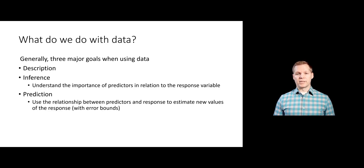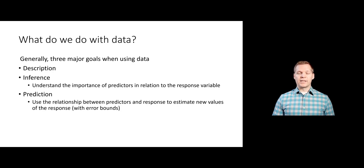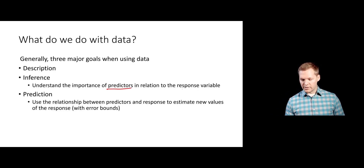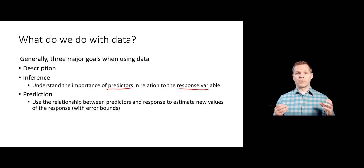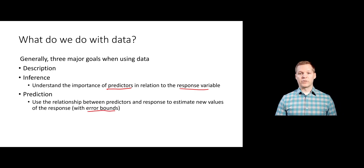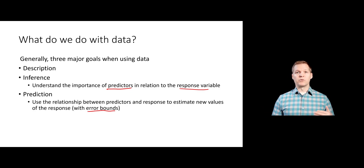We generally have three goals: first, we might just want to describe the data we have. That's not very common — maybe you have a census, so you have data on everybody you care about and you just want to describe the relationships you see. The other two cases are much more common: statistical inference, where you figure out which predictors are related to the response variable; and prediction, where you take your explanatory variables and create some function of those to predict the response variable, usually with error bounds on those predictions.